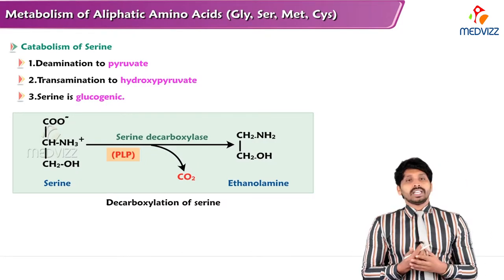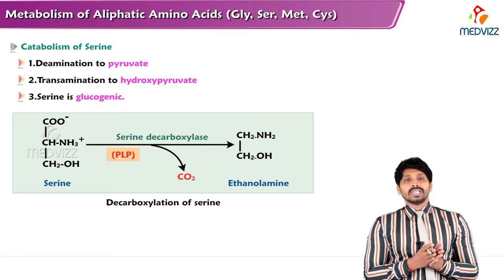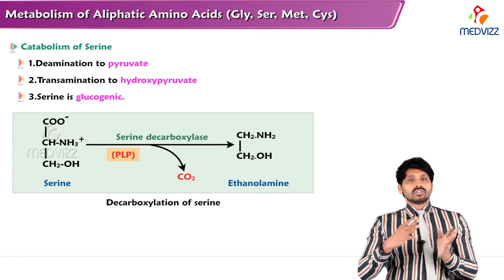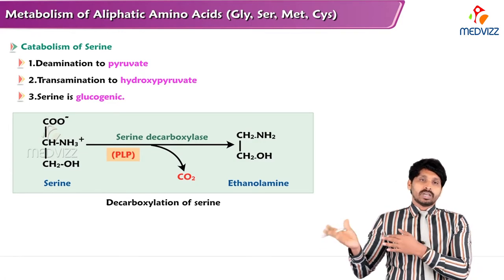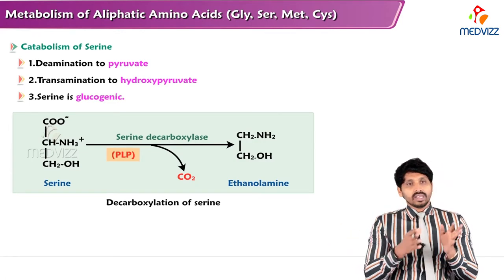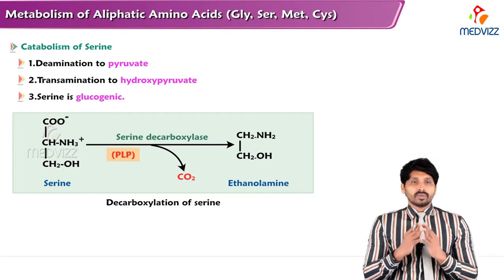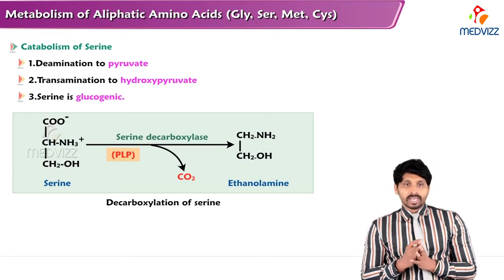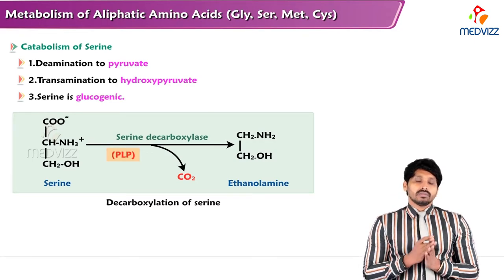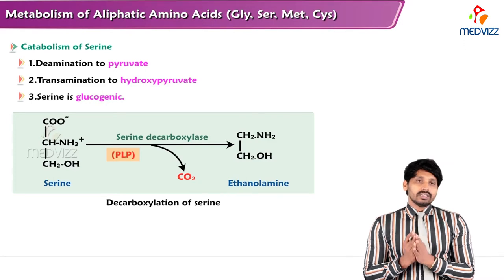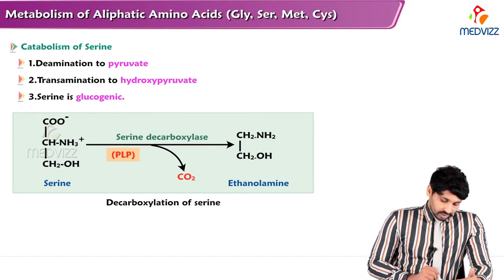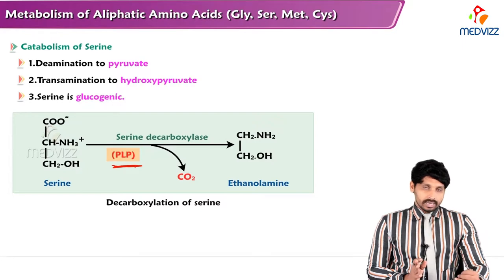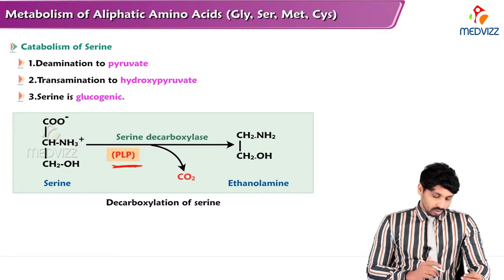First, deamination: when you want to degrade serine, serine converts to pyruvate via deamination. Similarly, transamination to hydroxypyruvate can occur. Serine is glucogenic. The coenzyme involved is PLP — pyridoxal phosphate — which is vitamin B6, a water-soluble vitamin.